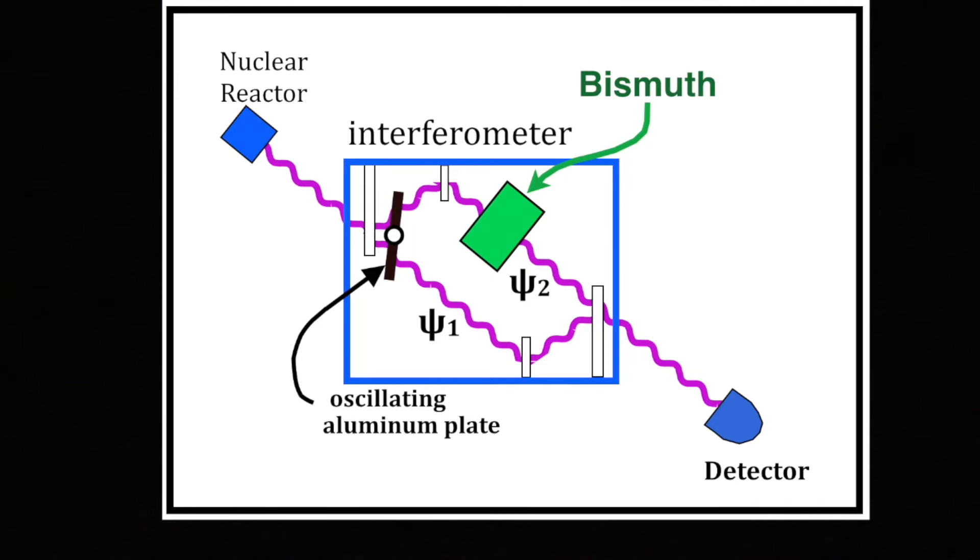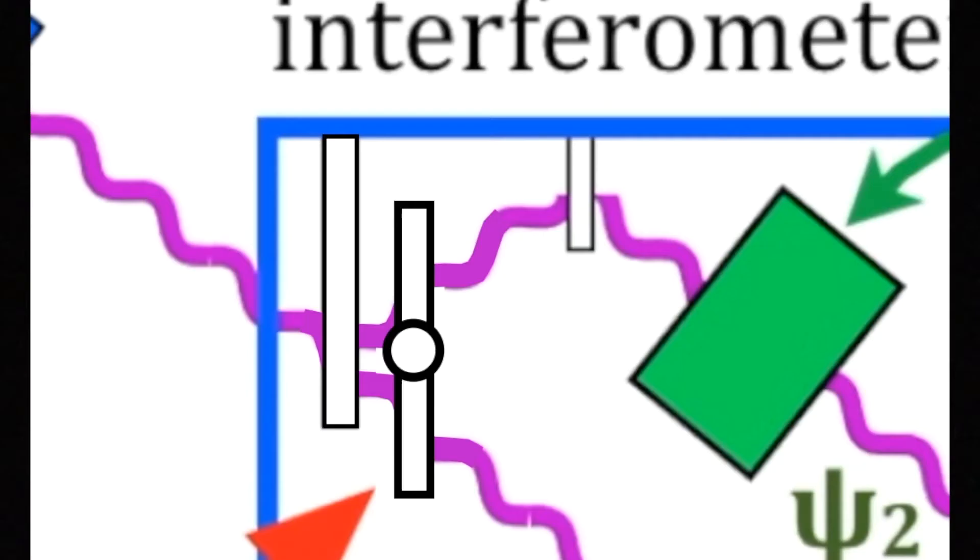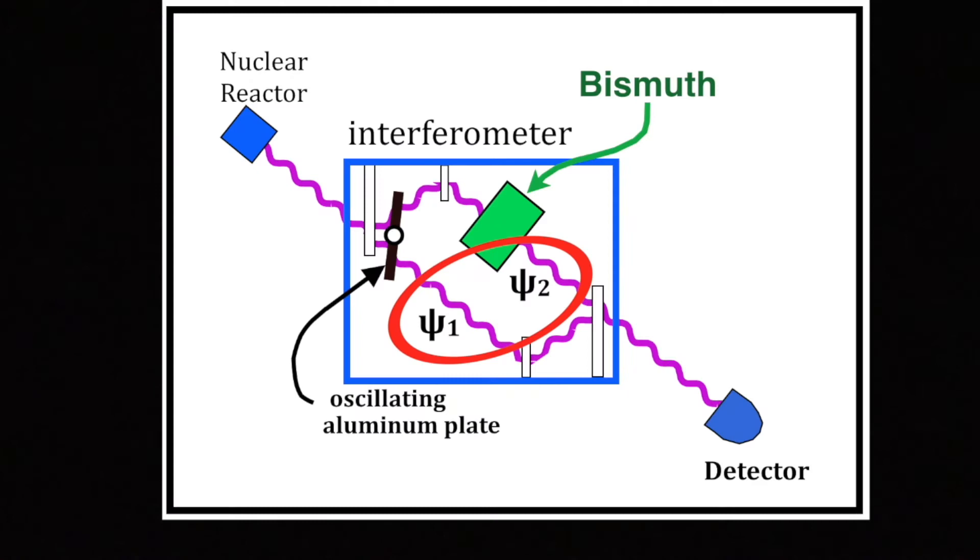Just at that point where the two beams, ψ1 and ψ2, split, there was an oscillating aluminum plate which caused the phase of the two waves to be different from each other. Therefore, when the two waves recombined before leaving the interferometer, the detector saw a sine wave, which is to say wave interference.